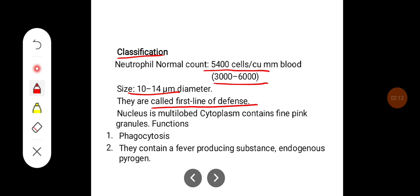Nucleus in neutrophil is multilobed. Cytoplasm contains fine pink granules, both acidophilic as well as basophilic. The important functions of the neutrophil are phagocytosis and they contain a fever-producing substance, endogenous pyrogen.